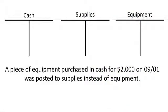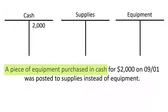Let's imagine that a piece of equipment purchased in cash for $2,000 on September 1st was posted to supplies instead of equipment. Using these T-accounts, let's take a look at what should have happened and then what actually happened. We know that a piece of equipment was purchased in cash, so that would have reduced cash — that's a credit to cash.